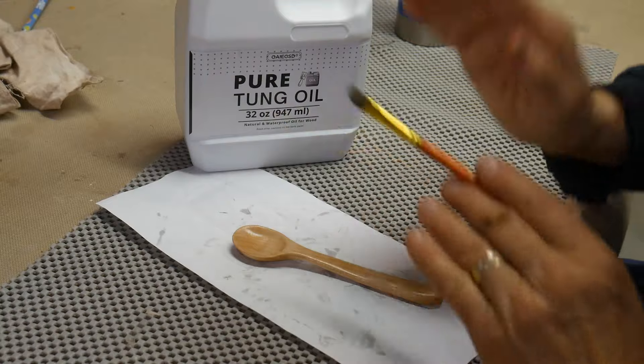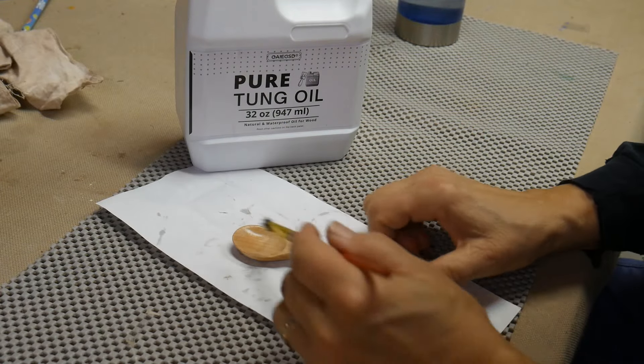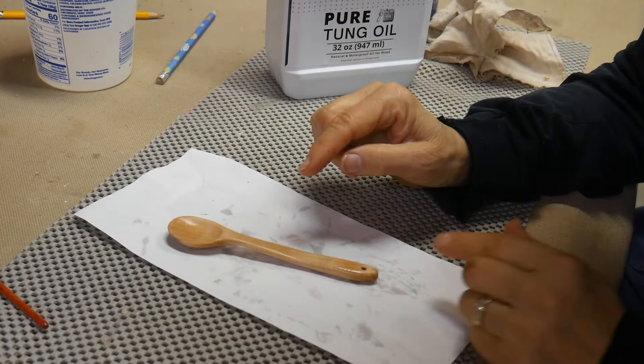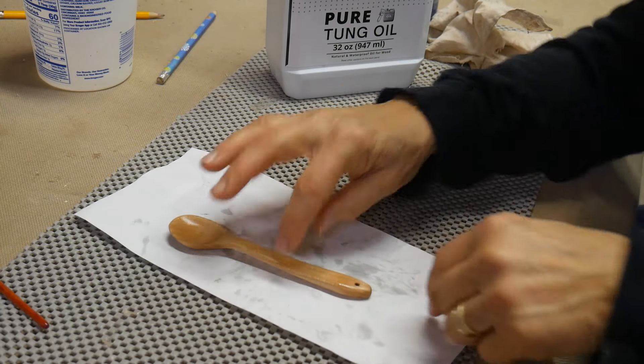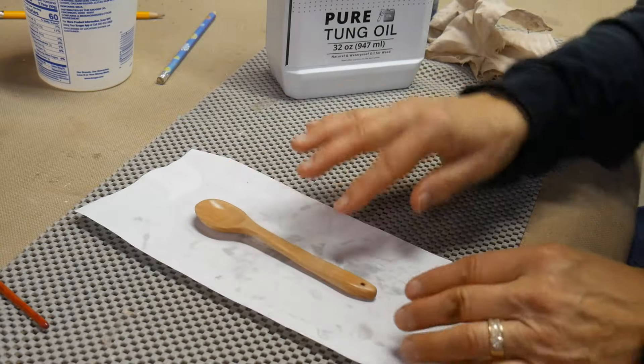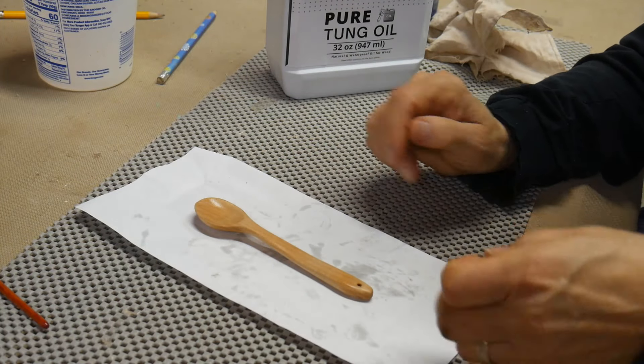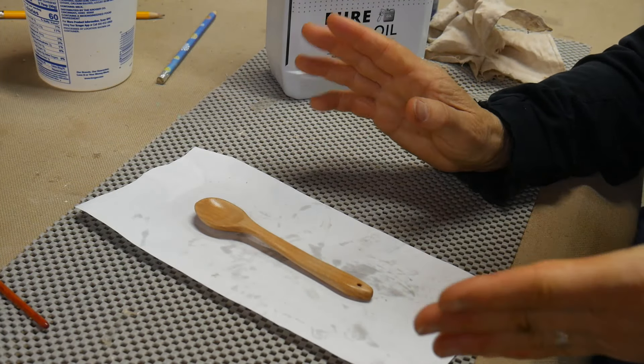I have applied my second coat of tung oil, and before I did that, I decided I wanted to drill a hole at the bottom here in case I want to put a string through it and hang it up and hang it from a belt or something like that.